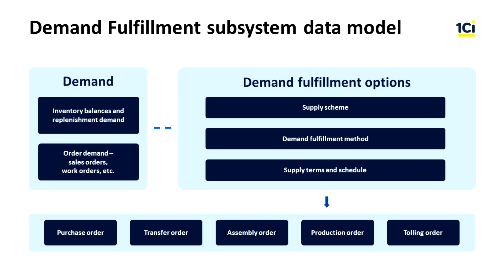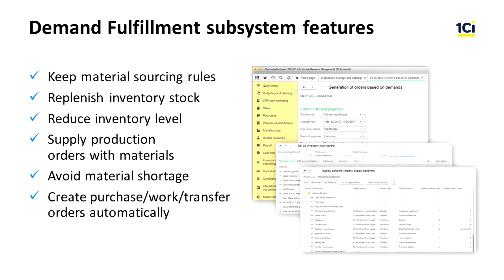The demand fulfillment subsystem also controls the inventory stock level and creates orders for inventory replenishment when required. It provides production with necessary resources, helps to reduce costs of goods storage and delivery, and increases the customer service level. This subsystem helps the enterprise to function smoothly while reducing costs caused by an inflated level of inventory.